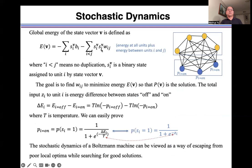Global energy of a state vector v is defined as two terms. One is the energy at all units, the second term is the energy between the units i and j, where i smaller than j means no duplication. Here vi is a binary state assigned to unit i by state vector v.